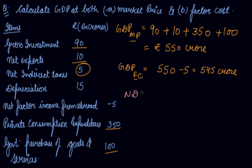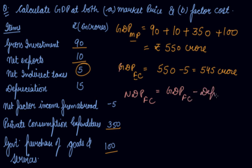Now to calculate NDP at FC, you take GDP at FC and subtract depreciation. So 545 minus depreciation of 15 gives you NDP at FC = rupees 530 crore.